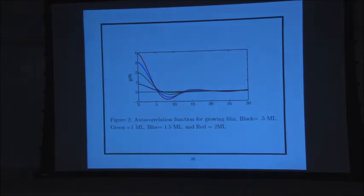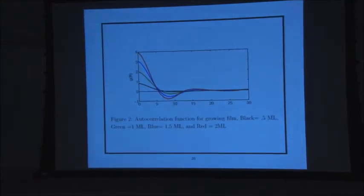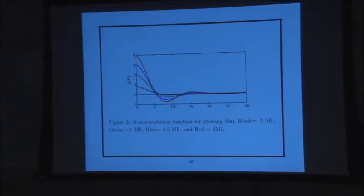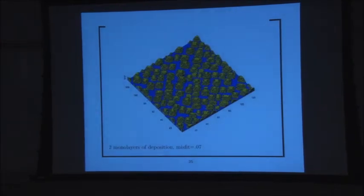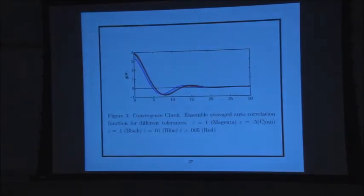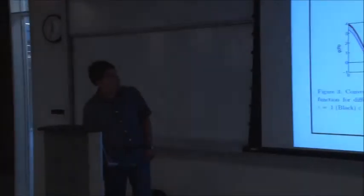You can measure the autocorrelation as the film grows — that's a useful thing to do. One thing we were concerned about, of course, is whether our method works. When you're doing stochastic problems, it's kind of hard to check how you're doing since the problems are random. That's why we used the autocorrelations to check that our method was behaving properly.